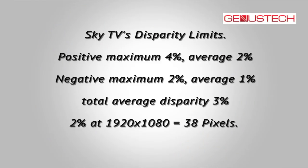Let's have a look at some figures. These numbers are the disparity limits that Sky Television, the UK's 3D broadcaster, have set down for their productions. It also happens that 3Net are working to very similar specifications. They want an average of 2% positive disparity across their programme, with a maximum of 4%. Why have they chosen this figure of 2%? Well, 2% works very well across a broad range of screen sizes.